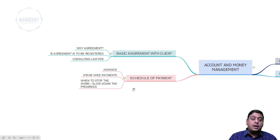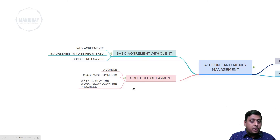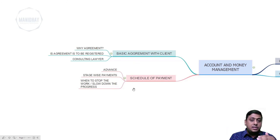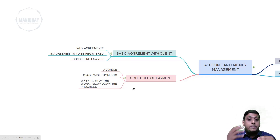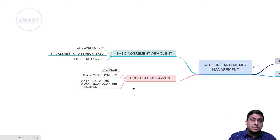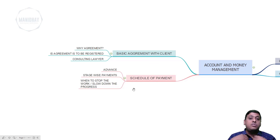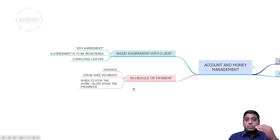When you release each stage of drawings, that corresponding amount has to be paid. If stage-wise payments are properly set up, there will be no problems. Otherwise, you may release the third, fourth, and fifth stage drawings without receiving payment, leading to frustration, reduced quality, and a damaged client relationship — you may not get your money and the client may give negative reviews.